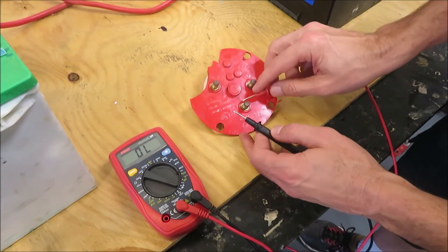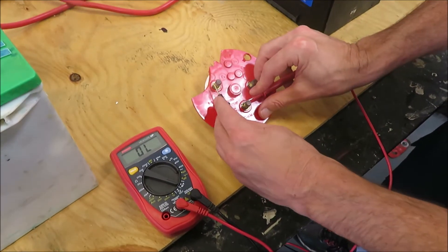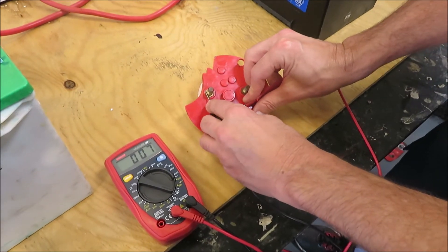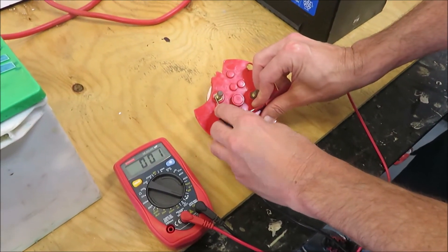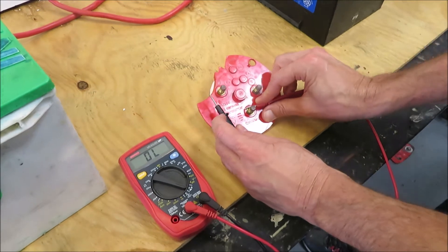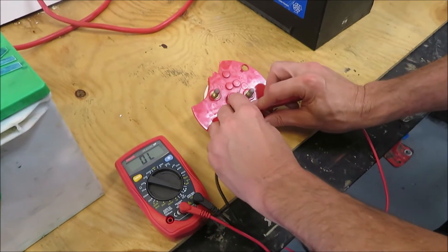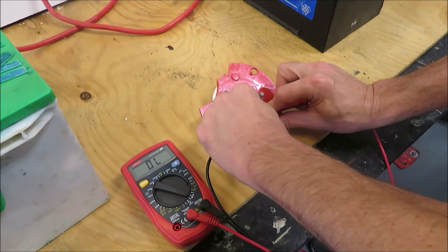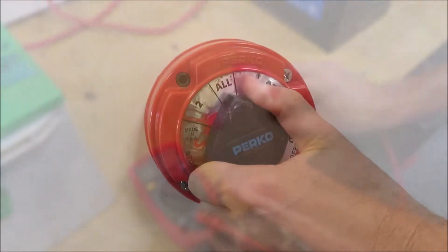So we use the common as our positive. And we've got a good connection. But in position one, we shouldn't get anything on post number two and we're not.